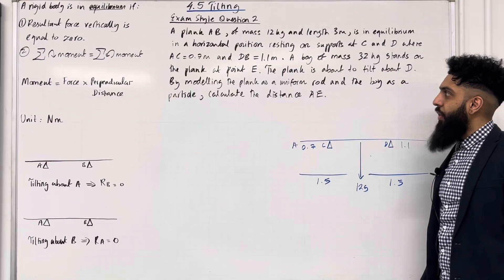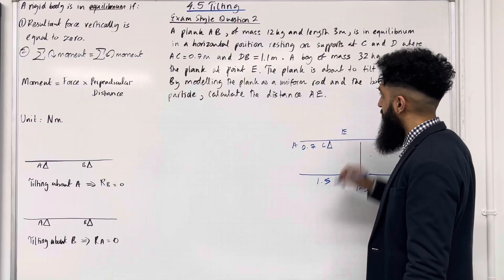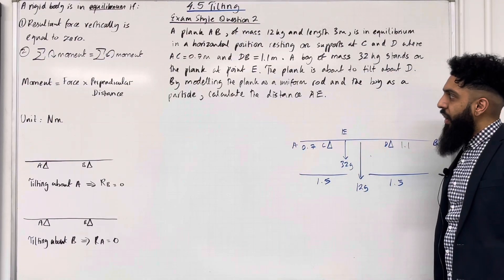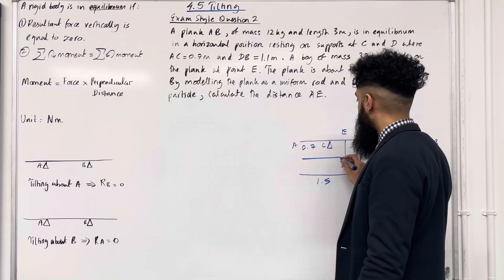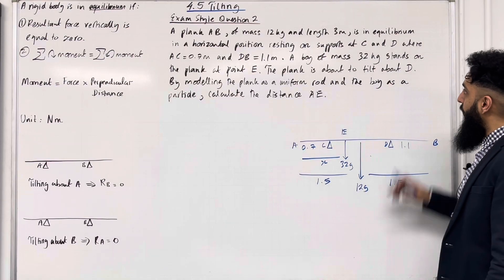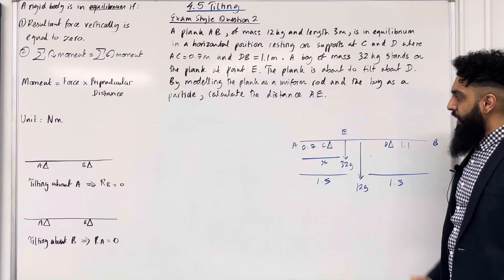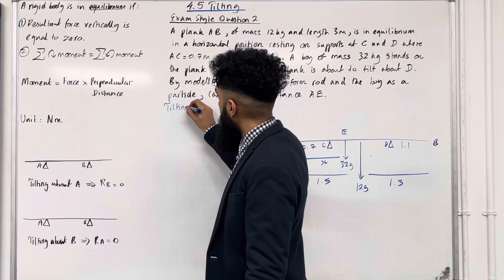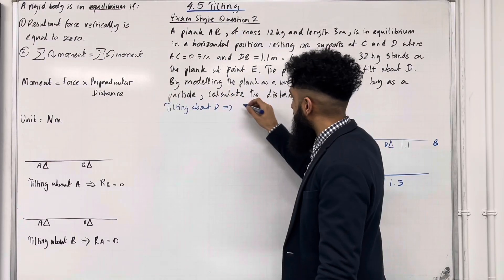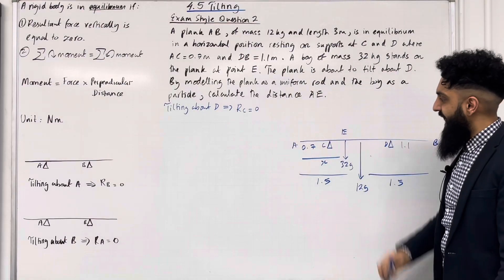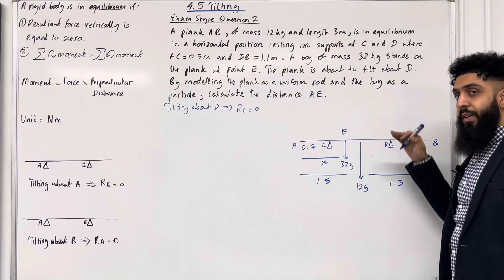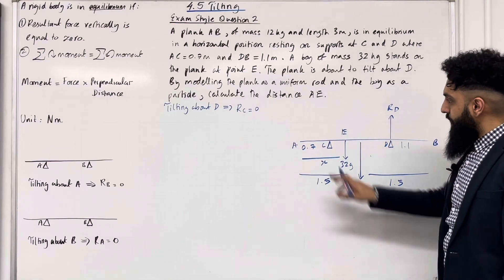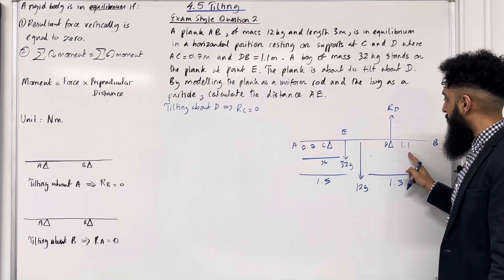A buoy of mass 32 kg stands on the plank at point E, so the weight is 32g. We want to calculate the distance AE, which we'll call X. The plank is about to tilt about D, which implies the normal reaction at C is equal to 0 — the body is not in contact with support C. We must label the normal reaction at D as RD. The distance from A to D is 3 minus 1.1, which is 1.9 metres.